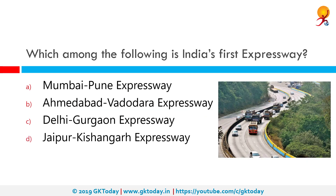Which among the following is India's first expressway? The correct answer is the Mumbai-Pune Expressway, which is a six-lane concrete high-speed tolled access-controlled, 93 km long expressway.